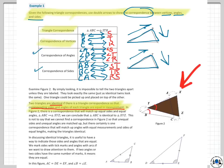The corresponding sides and angles of each triangle are equal in measurement. In figure 2, there is a correspondence that will match up equal sides and equal angles. Triangle ABC will correspond to triangle XYZ. We can conclude that triangle ABC is identical to triangle XYZ.